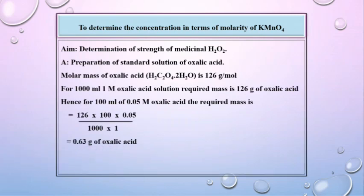Part A is preparation of standard solution of oxalic acid. Molar mass of oxalic acid is 126 gram per mol. For 1000 ml 1 molar oxalic acid solution, required mass is 126 gram of oxalic acid. Hence, for 100 ml 0.05 molar oxalic acid, the required mass is 126 × 100 × 0.05 ÷ 1000 × 1.